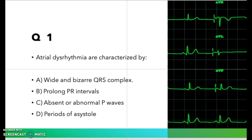The first question: atrial dysrhythmias are characterized by — A) a wide and bizarre QRS complex, B) prolonged PR intervals, C) absence or abnormal P wave, or D) periods of asystole. Take a moment and think about this question before I give you the answer.